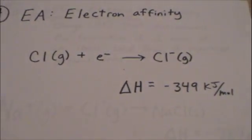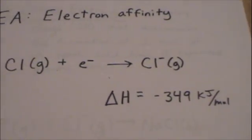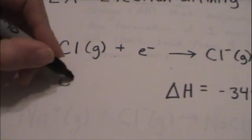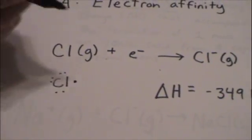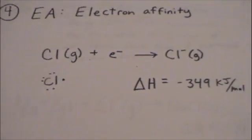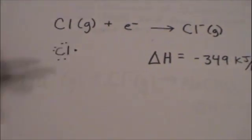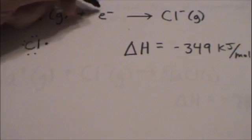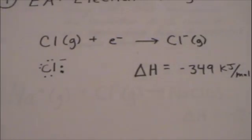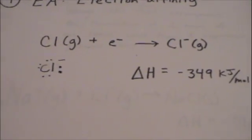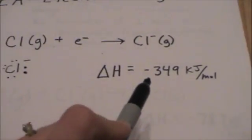Cl⁻ is much happier than Cl gas, because this Cl gas has 7 valence electrons. It's dying to pick up one more electron, which is going to be provided by this E. Now that Cl⁻ has had an electron added, it has its complete octet — 8 valence electrons — and it's going to be very stable, so it's actually exothermic.